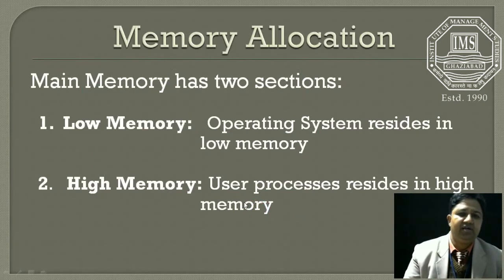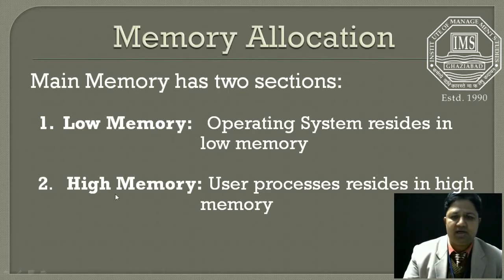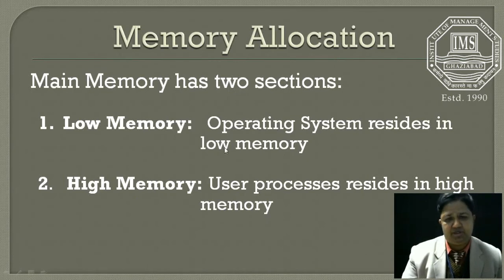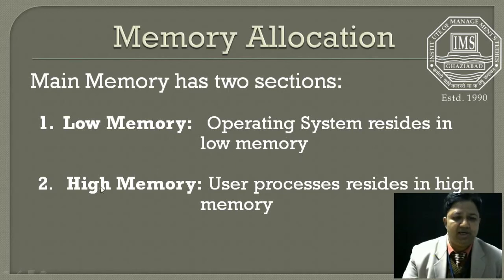We can divide main memory into two main partitions or sections. Number one is called low memory and number two is called high memory. The operating system resides in low memory. It can also reside in high memory, but it depends upon the interrupt vector, and generally the interrupt vector resides in low memory. That is why the operating system is generally kept in low memory, while user processes all reside in high memory.